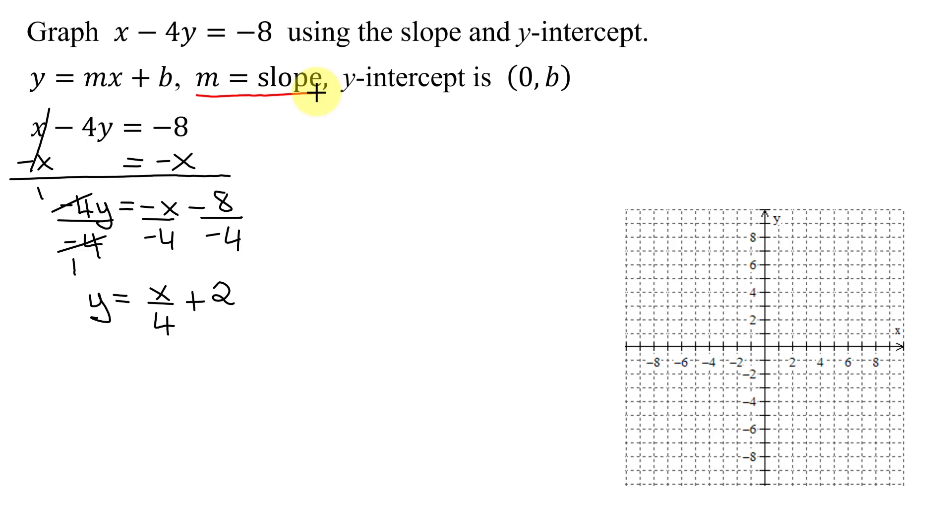Remember, m is the slope, it's the coefficient of the x-term. But be careful in this case, it's not 4. In front of the x, we're too efficient to write a 1, so my slope is 1 divided by 4. So my slope is 1 fourth,